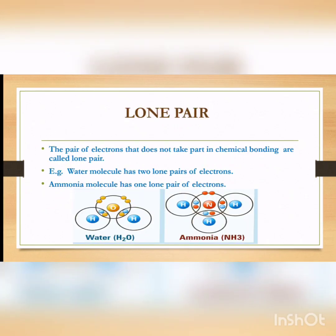To understand a coordinate bond, the first thing is our concept of lone pair should be very clear. What is a lone pair? It is a pair of electrons that does not take part in chemical bonding. For example, a water molecule has two lone pairs of electrons and an ammonia molecule has one lone pair of electrons.